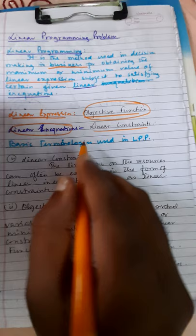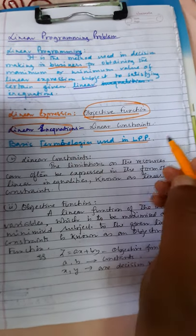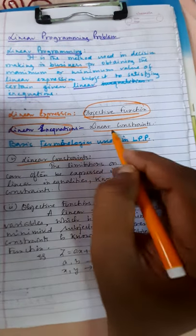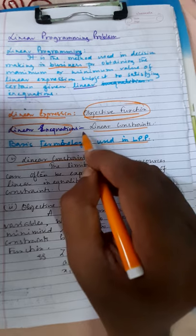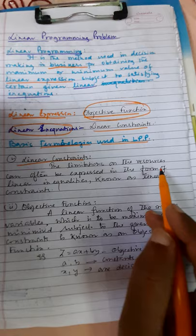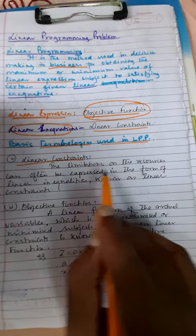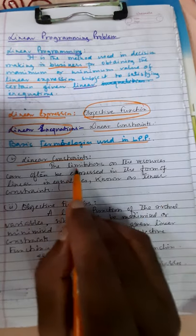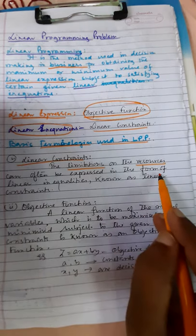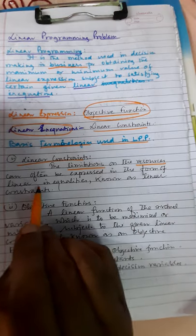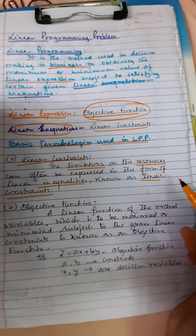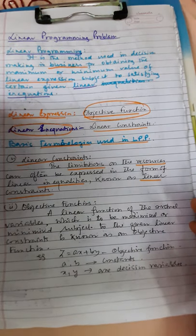Basic terminologies used in LPP — what are the basic terminologies used in linear programming? First one is the linear constraint. The limitations on the resources can often be expressed in the form of linear inequalities, known as linear constraints.